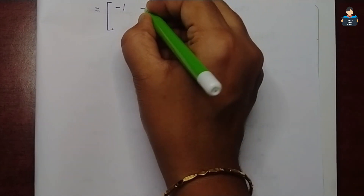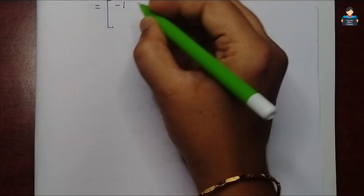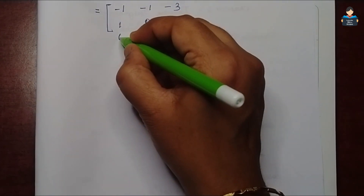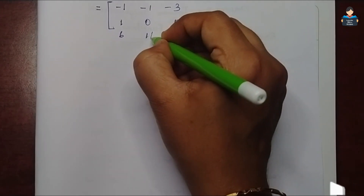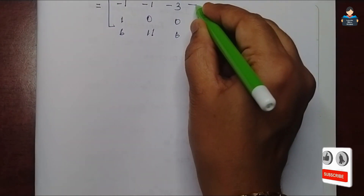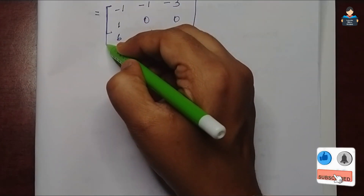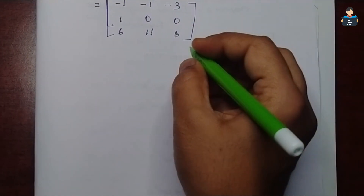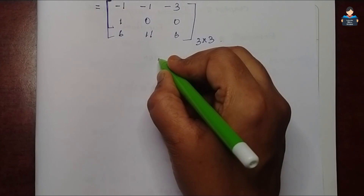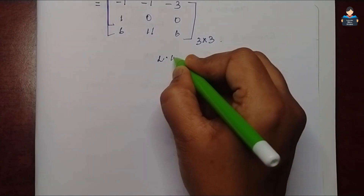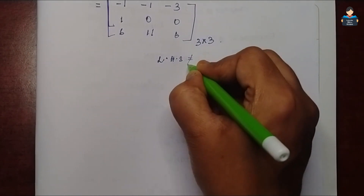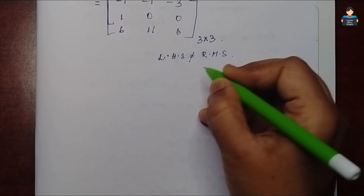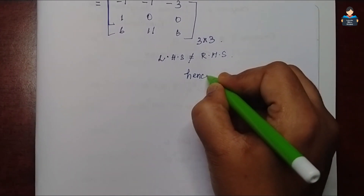So the final RHS matrix is [−1, −1, −3; 1, 0, 0; 6, 11, 6]. Looking at LHS [5, 8, 14; 0, −1, 1; −1, 0, 1] and RHS [−1, −1, −3; 1, 0, 0; 6, 11, 6], we can see LHS is not equal to RHS. Hence proved.